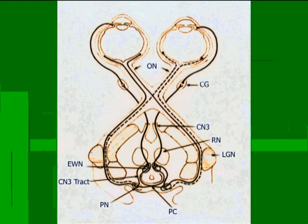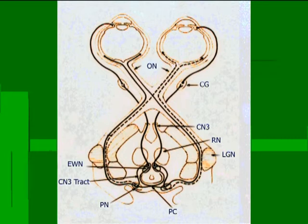This is a relatively complicated slide, but I'm going to talk you through it — it's a really good one to understand how the pupil works. Images are sent by the optic nerve to the optic chiasm, and then through the optic tract, missing the lateral geniculate body. The pupillary fibers don't go to the lateral geniculate body like the visual fibers do — they bypass it, and go to the pre-tectal nuclei on the contralateral and ipsilateral side.